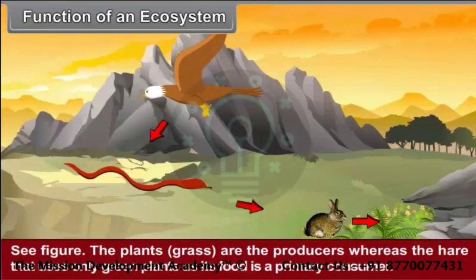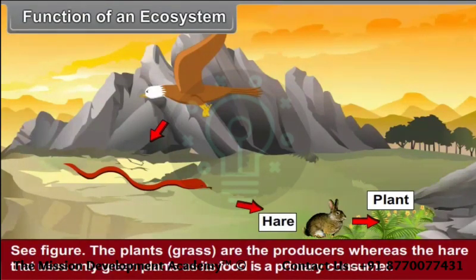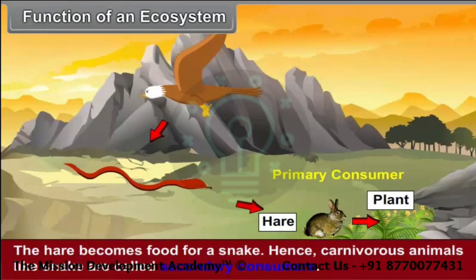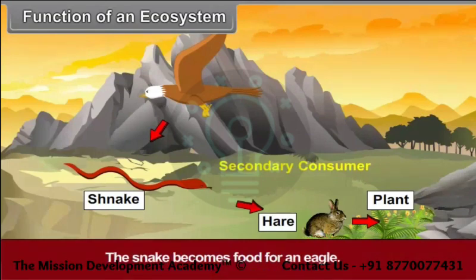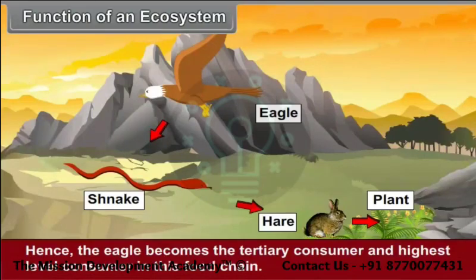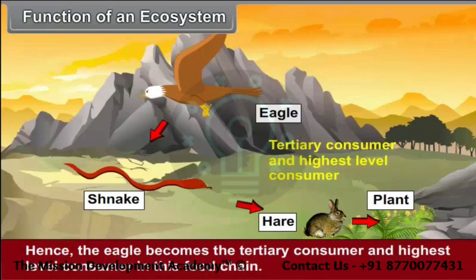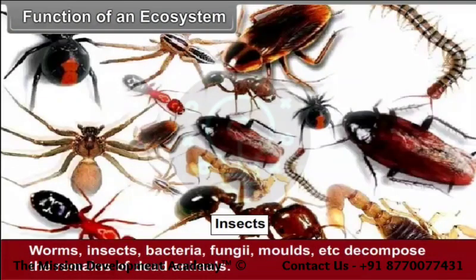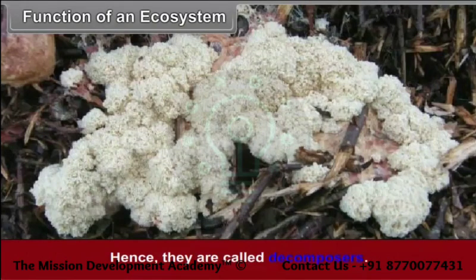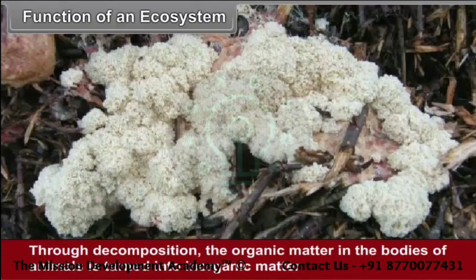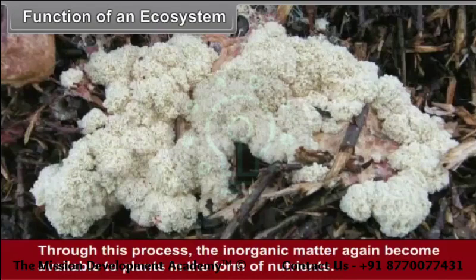The plants, that is grass, are the producers, whereas the hare that uses only green plants as its food is a primary consumer. The hare becomes food for a snake; hence carnivorous animals like snakes are called secondary consumers. The snakes become food for an eagle; hence the eagle becomes the tertiary consumer and the highest level consumer in this food chain. Worms, insects, bacteria, fungi, molds, etc. decompose the remains of dead animals and are called decomposers. Through decomposition, organic matter in the bodies of animals is turned into inorganic matter which gets mixed in the soil, becoming available to plants again as nutrients.